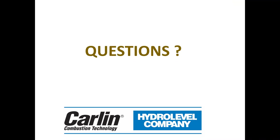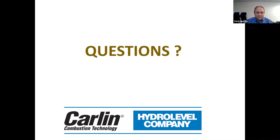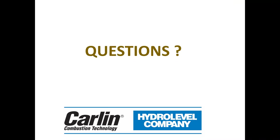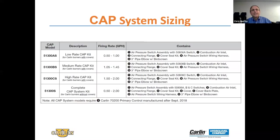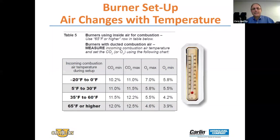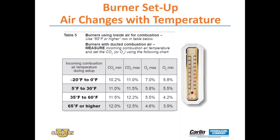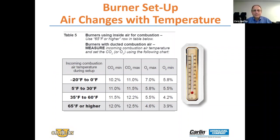Question from the audience: what was the maximum length you can run that pipe? 80 feet — 80 linear feet, including your elbows and any fittings. Another question: that chart shown for setting up with cold air temperatures — is that the same chart used for gas or is it a little different? The answer is no, it's not the same chart used for gas. This one was developed specifically for the CAP system based on our lab testing.